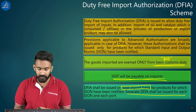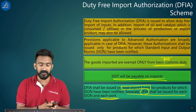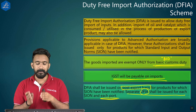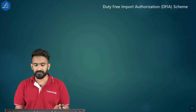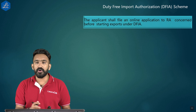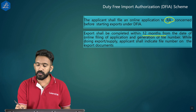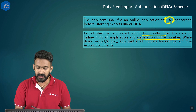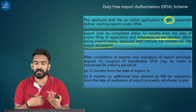An important amendment: separate DFIA shall be issued for each SION and each port. Earlier, EPCG-enabled ports used a common application, but now each port requires a separate DFIA for each SION or product. The applicant shall file an online application to the regional authority concerned before starting export under DFIA. Export shall be completed within 12 months from the date of online filing and generation of the file number, and the applicant shall indicate this file number on all export documents.